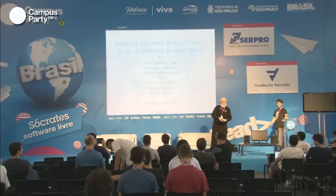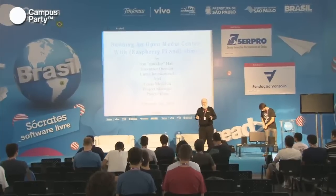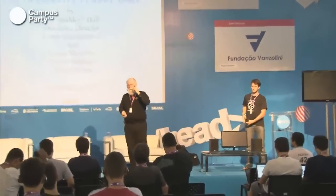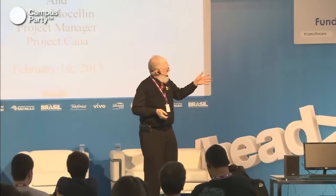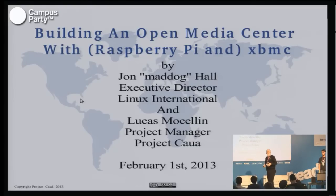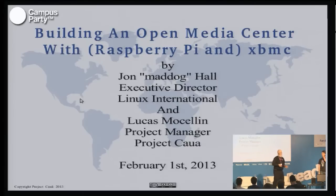This talk today is about XBMC and making an open media system, and particularly making an open media system using the Raspberry Pi. I'm going to be doing the first part of the talk, and then Lucas Mousseline is going to be doing the second part, which is a demonstration of the capabilities — the type of performance the Raspberry Pi gives, and the types of things you can do with different peripherals.